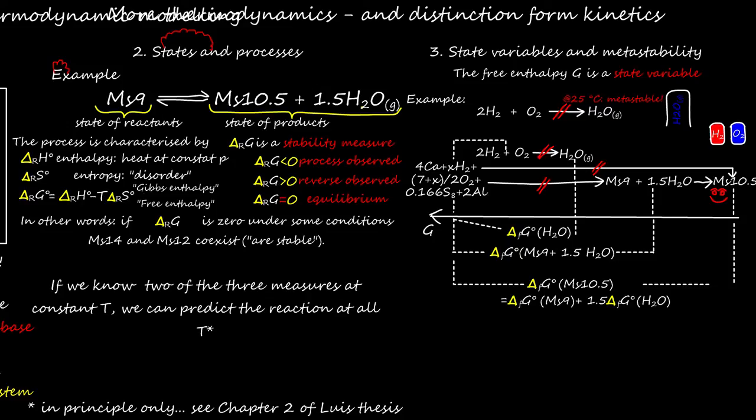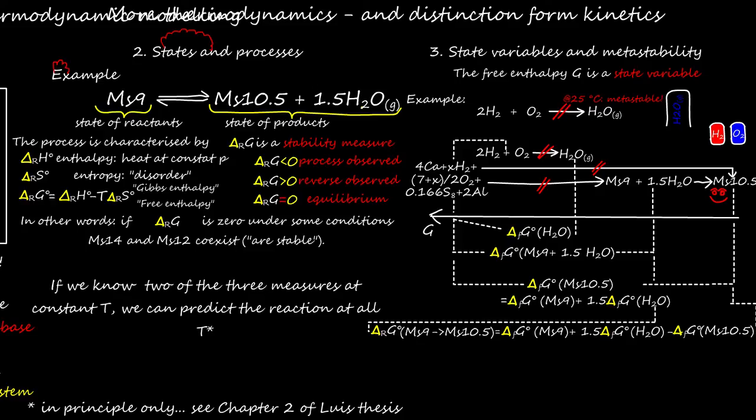Since the free enthalpy depends only on the state, we can also do something else. The difference MS10.5 to MS9 plus 1.5 H2O is the difference between the differences of the two states to the state of the pure elements. Therefore, we can calculate delta RG by considering the relative difference to the elements. You may have already noticed that the formation of any component from the elements is not denoted by delta RG but delta FG. F for formation. These values are part of any thermodynamic database because they facilitate the calculation we have just outlined. It may be noted that this principle also works in the other direction. Assume we know the free enthalpy of formation of MS10.5 and want to know the one of MS9. I can do this simply by rearranging this equation. More information can be found in thermodynamic textbooks as Hess law.